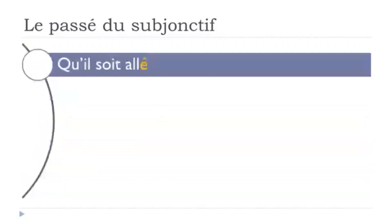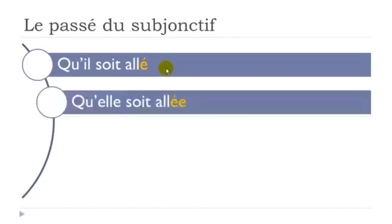For verbs that require être, like aller, the rules are exactly the same as for all other composed tenses. For qu'il soit allé, aller ends with accent aigu. But for the feminine form qu'elle soit allée, you must add the mark of the feminine — an E — at the end of the participe passé. For the masculine plural qu'ils soient allés, you add the mark of the plural — an S. For the feminine plural qu'elles soient allées, you add both — ES.